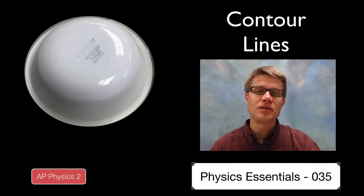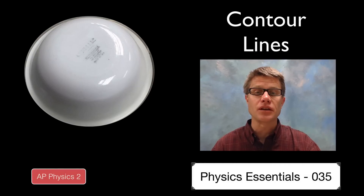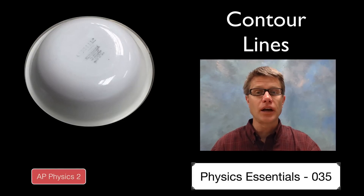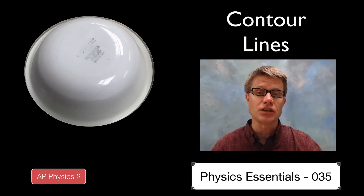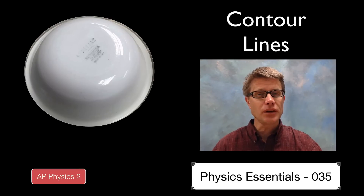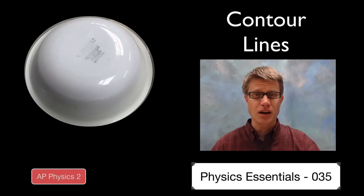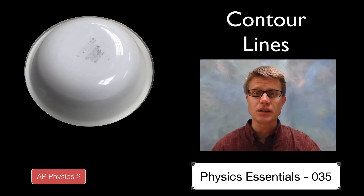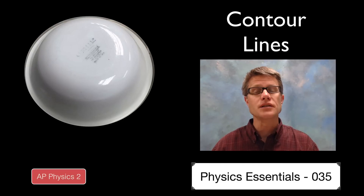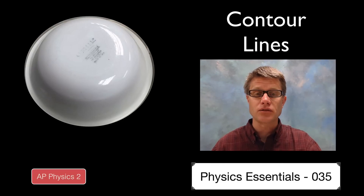Hi, it's Mr. Andersen and this is AP Physics Essentials video 35. It's on the contour line, which is a line of equal elevation and therefore a line of equal gravitational potential energy. Now this is really an earth science topic, so you might be asking yourself why are we talking about this in physics? Well, we're going to use this idea of contour lines as an analogy to talk about equal potential lines in electric fields.